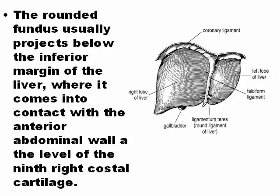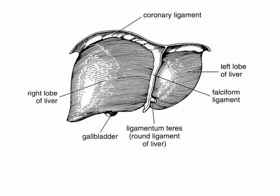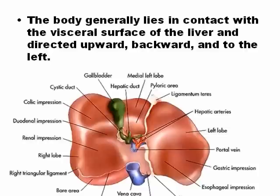The rounded fundus usually projects to the inferior margin of the liver and comes into contact with the wall of the abdomen. This is called the Murphy's point — the point where the gallbladder touches the abdominal wall. The gallbladder has different positions in different persons, but in general it is in contact with the visceral surface of the liver and directed upward and backward to the left. There are very different positions; not all people have the gallbladder in the same position, and in ultrasound you will not find the gallbladder in the same position in every patient.